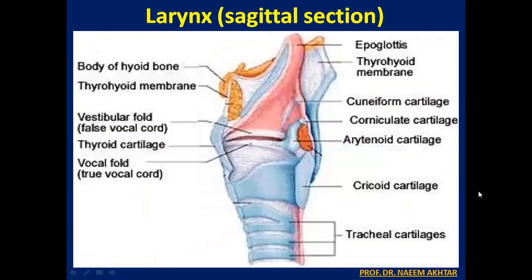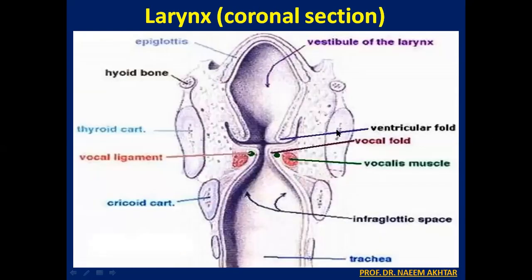This is the sagittal section of the larynx showing different cartilages, membranes and ligaments. In this figure you can see the coronal section of the larynx, showing the epiglottis, the vestibule of the larynx, the ventricular fold, the vocal fold, and the subglottic or infraglottic space.